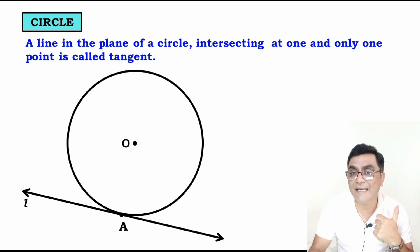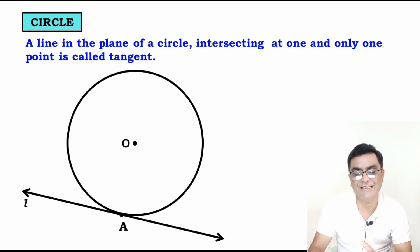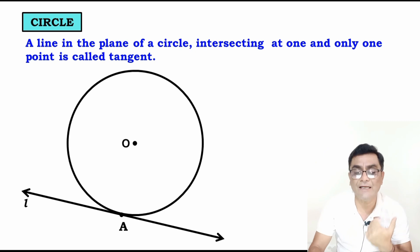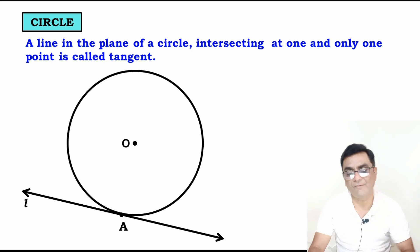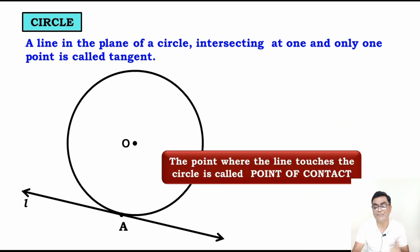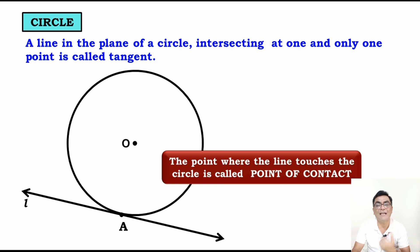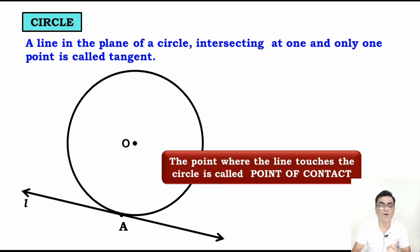A line in the plane of a circle intersecting it at one and only one point is called a tangent. The point where the line touches the circle is called the point of contact. Point A is the point of contact.